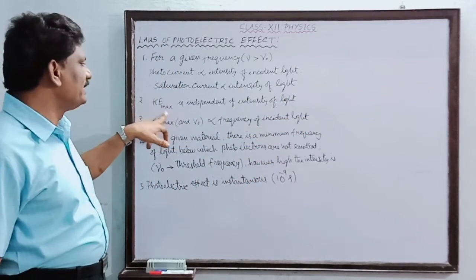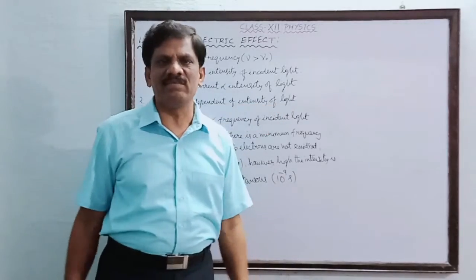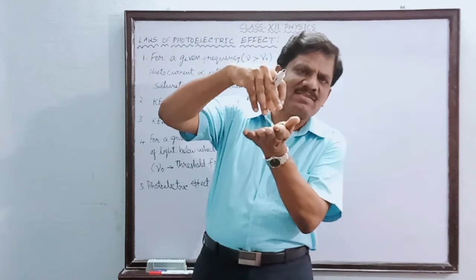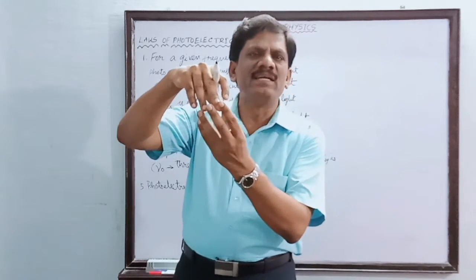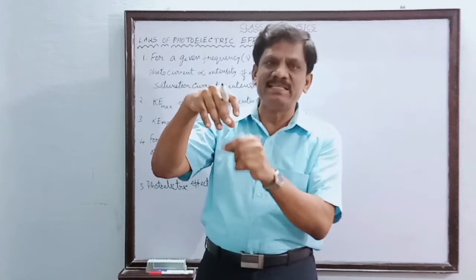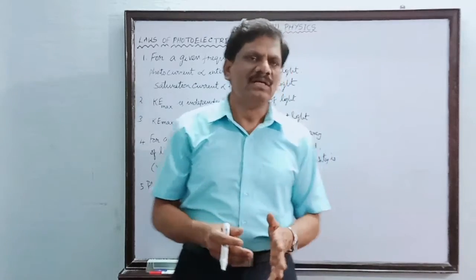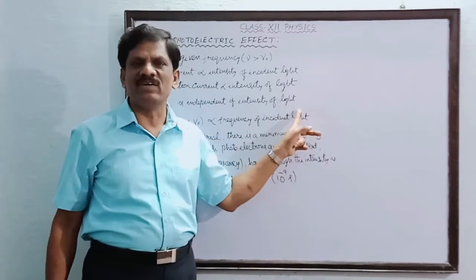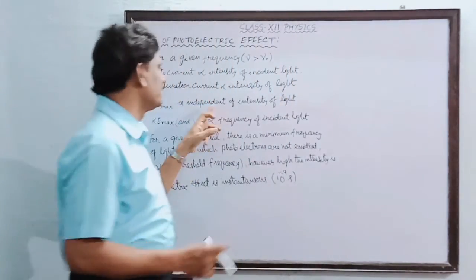The second law: the maximum kinetic energy of the photoelectrons is independent of the intensity of light. Even if the source of light is kept very close to the metal surface, bright light will fall on the metal — brightness is proportional to intensity, which is proportional to the number of photons per unit area per second — but if the energy is not sufficient, it cannot initiate photoelectric emission. Therefore, maximum kinetic energy is independent of intensity, and you must also remember that stopping potential is independent of intensity as well.